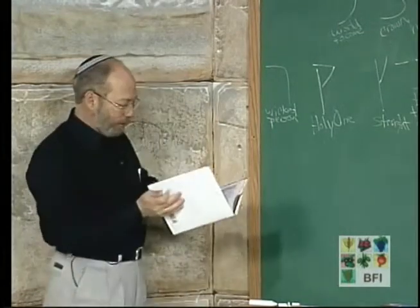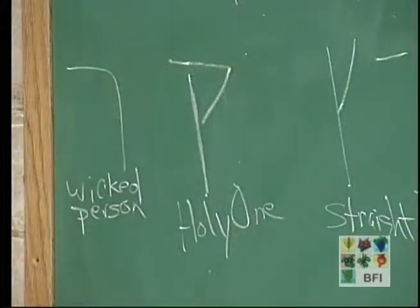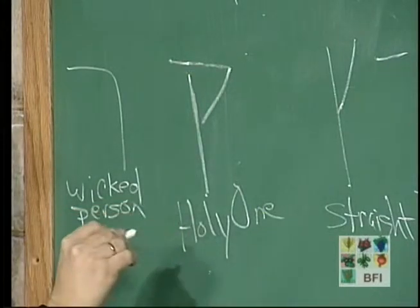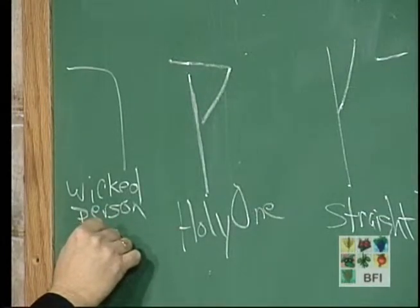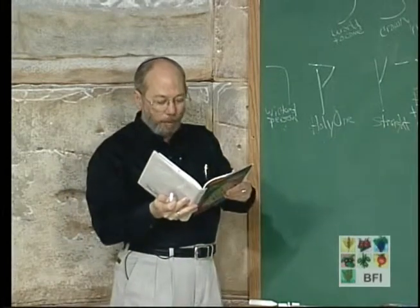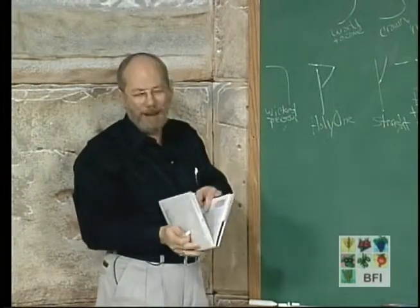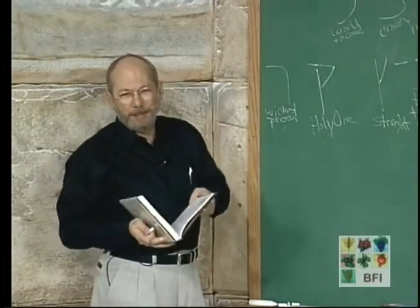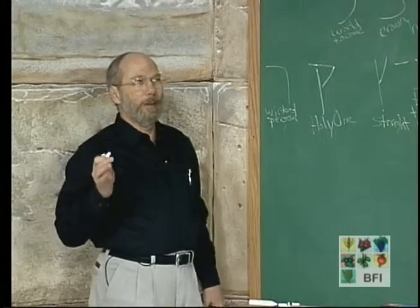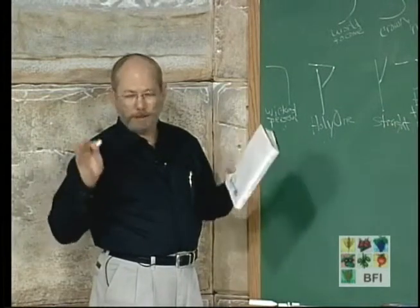And why does the crown of the Kuf — the little part sticking out — point toward the Resh? Because the Holy One, blessed is He, says: if the wicked person repents, if the Rasha repents, then I will bind upon him a crown like my own. To me this is exceedingly interesting. For an alphabet to actually be designed — and it is very designed — to teach us these lessons, is an amazing thing.